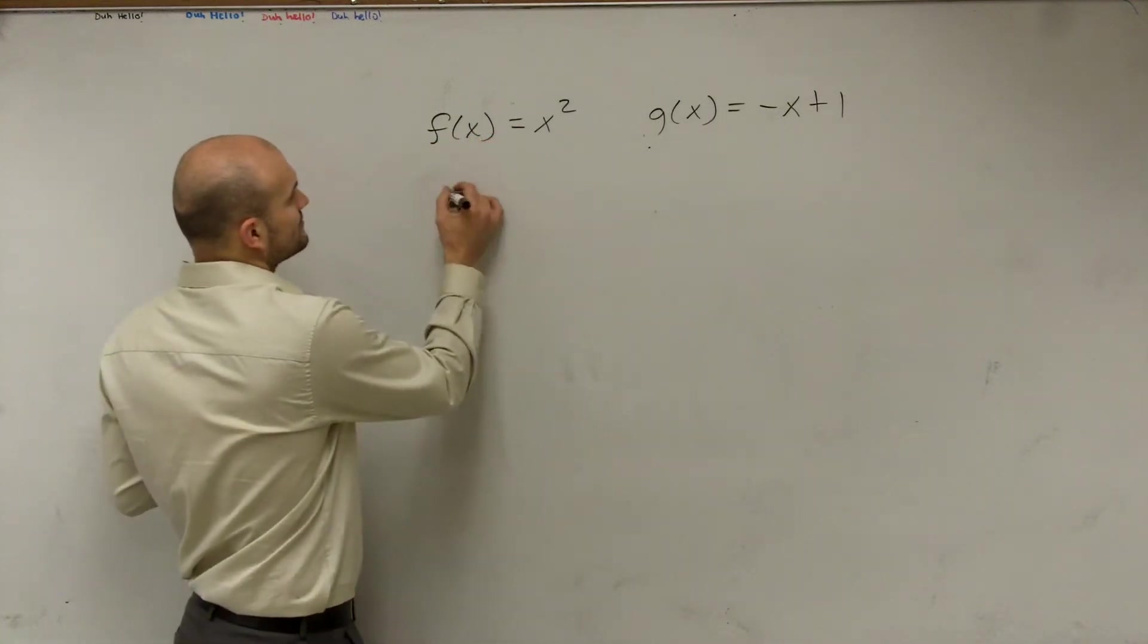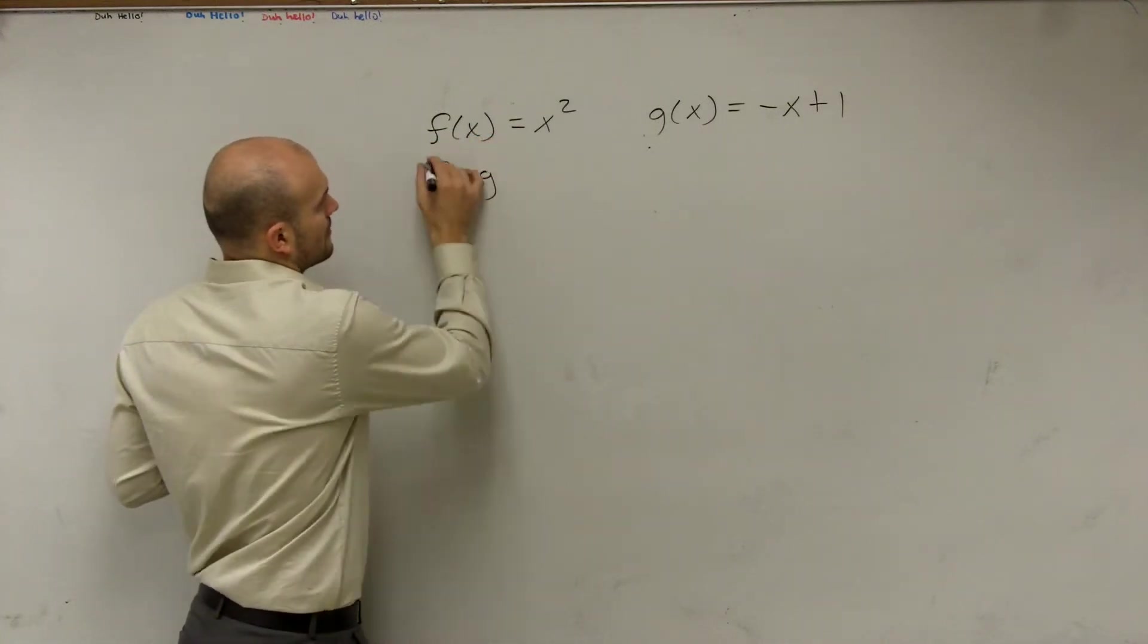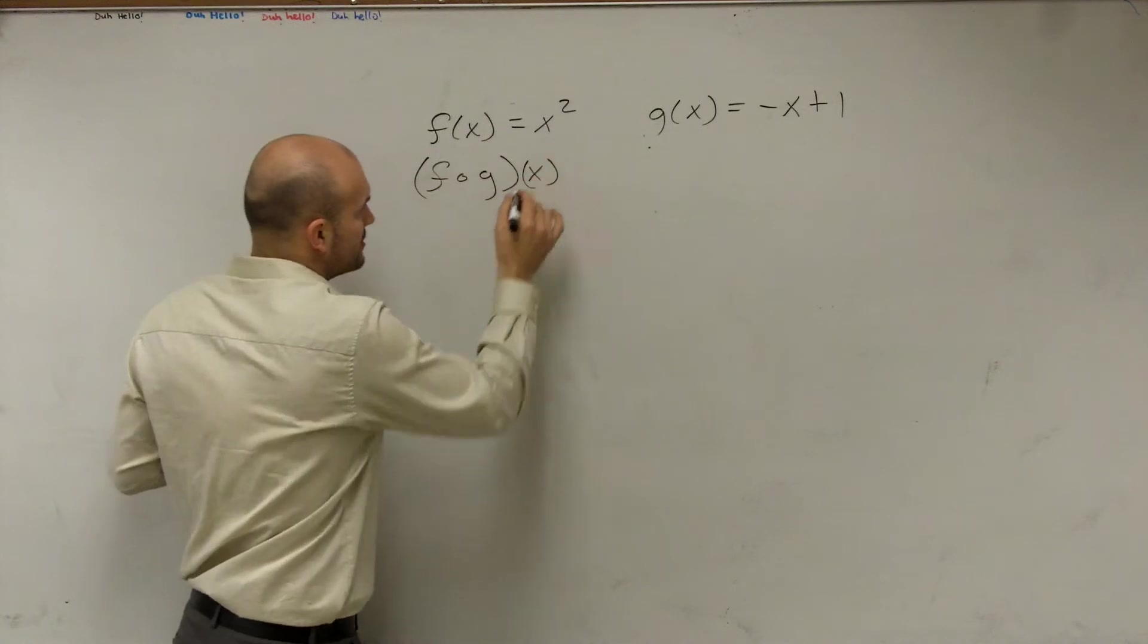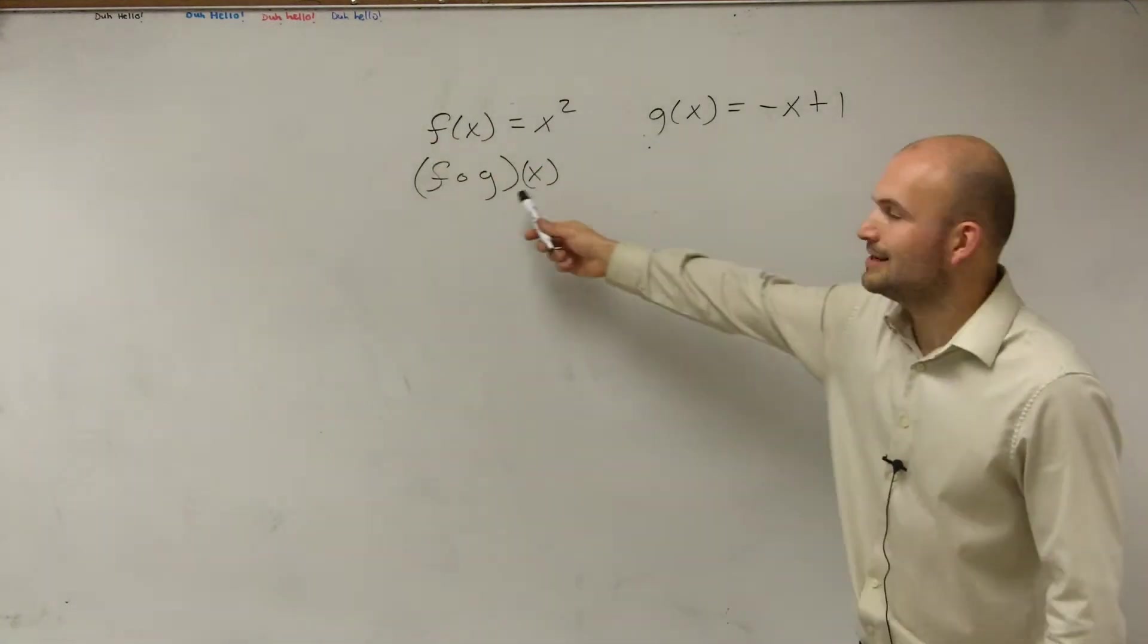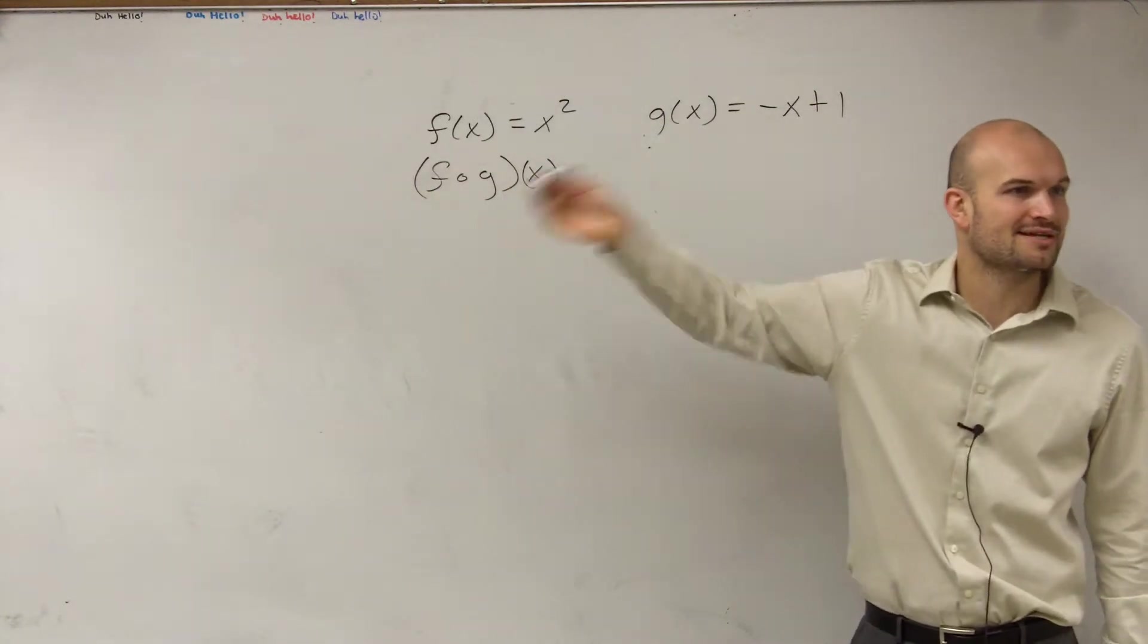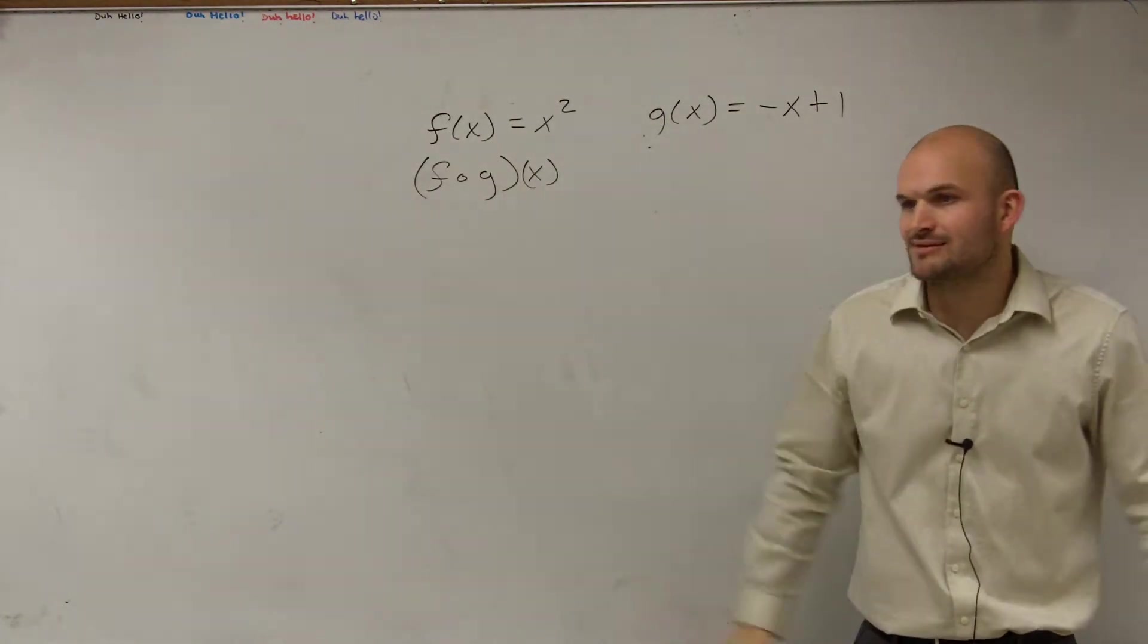So the first way we can write the composition is sometimes what we like to call fog in the math world because it has this little symbol that kind of looks like it resembles an O, so we sometimes say, oh, fog.